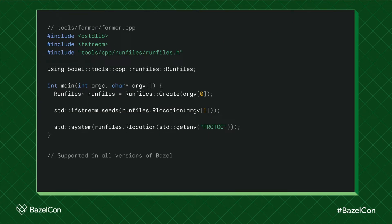And what do we do in code? We use the C++ run files library — there's actually a lot of documentation in that header file — but essentially you just do Runfiles::Create. In the case of C++, this needs argv[0] for some reasons, so you pass it in. And then you can just do runfiles->Rlocation of the thing that rlocation_path gave you, either in an environment variable or in an argument. That works, and that part is also supported in all versions of Bazel.